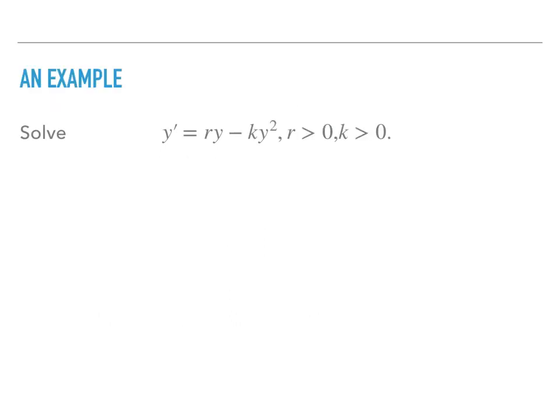Well, let's look at an example. If you want to solve this differential equation, y prime equals r y minus k y squared, and r and k are constants and they are both positive. Then you want to ask yourself, is this a Bernoulli equation? I would say yes, right? If you move the r y to the other side, you see that this is a Bernoulli equation, and n should be equal to 2 because of y squared on the right side.